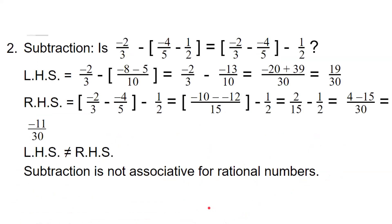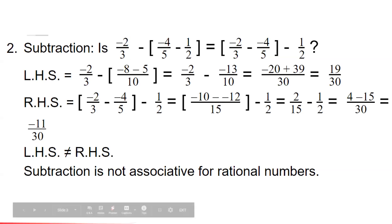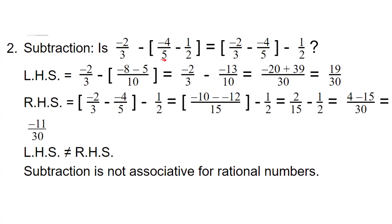Next, we are going to discuss that subtraction does not follow the associative property. That is, we will check: is 2/3 minus (minus 4/5 minus 1/2) equal to (2/3 minus minus 4/5) minus 1/2?